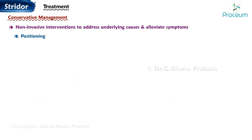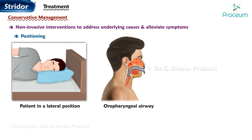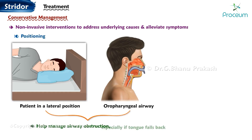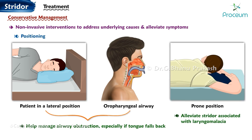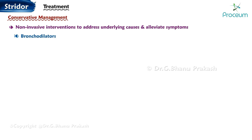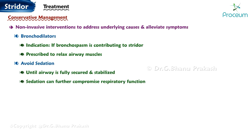Positioning: proper positioning, such as placing the patient in a lateral position or using an oropharyngeal airway, can help manage airway obstruction, especially if the tongue falls back. In some cases, placing the patient in a prone position can alleviate strider associated with conditions like laryngomalacia. Bronchodilators may be prescribed if bronchospasm is contributing to strider. It is important to avoid administering sedatives until the airway is fully secured and stabilized, as sedation can further compromise respiratory function.